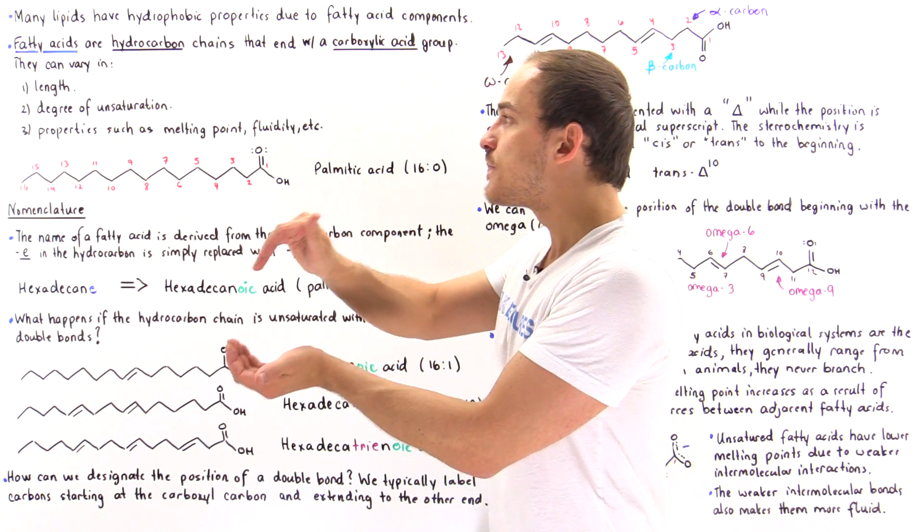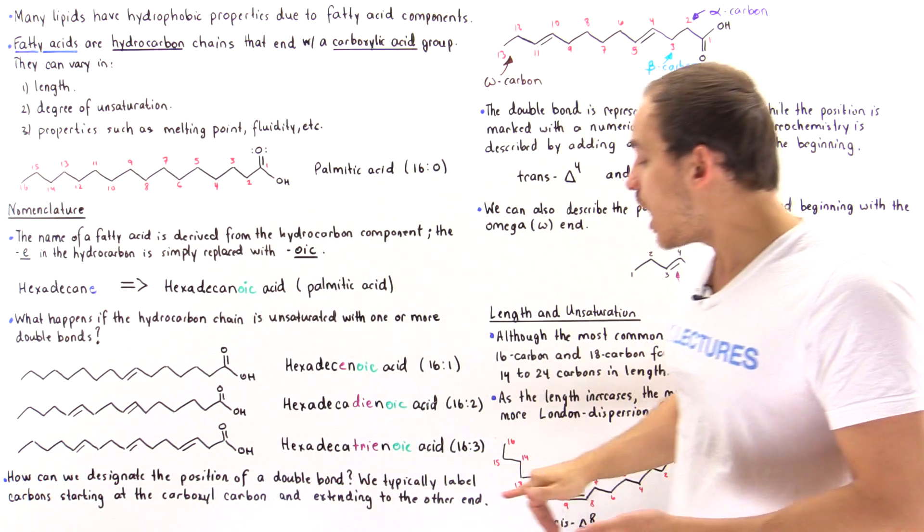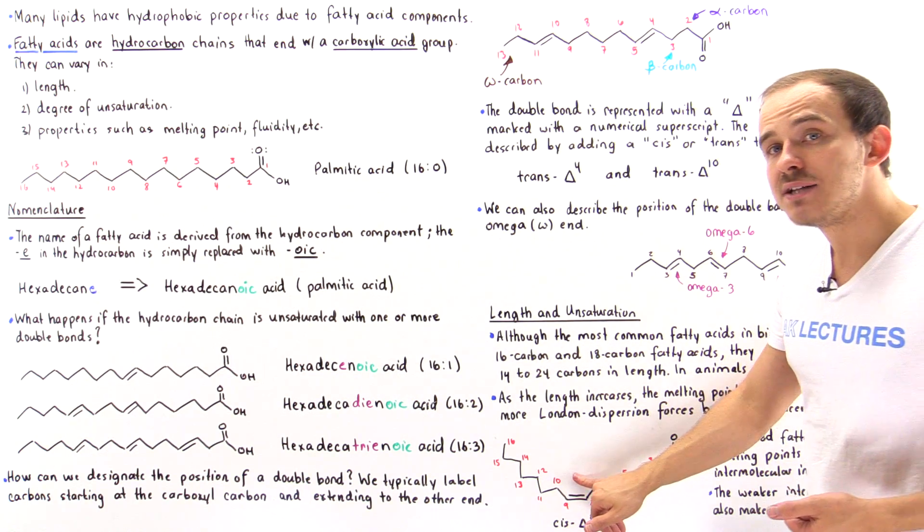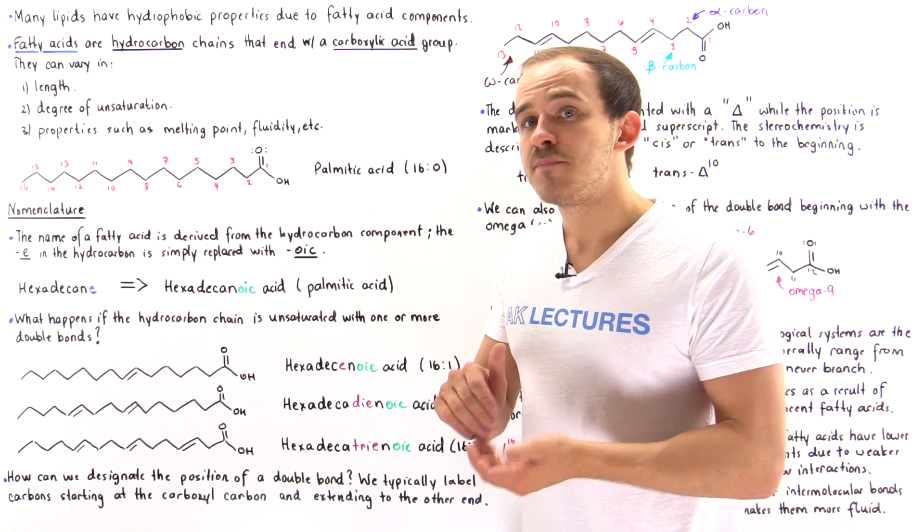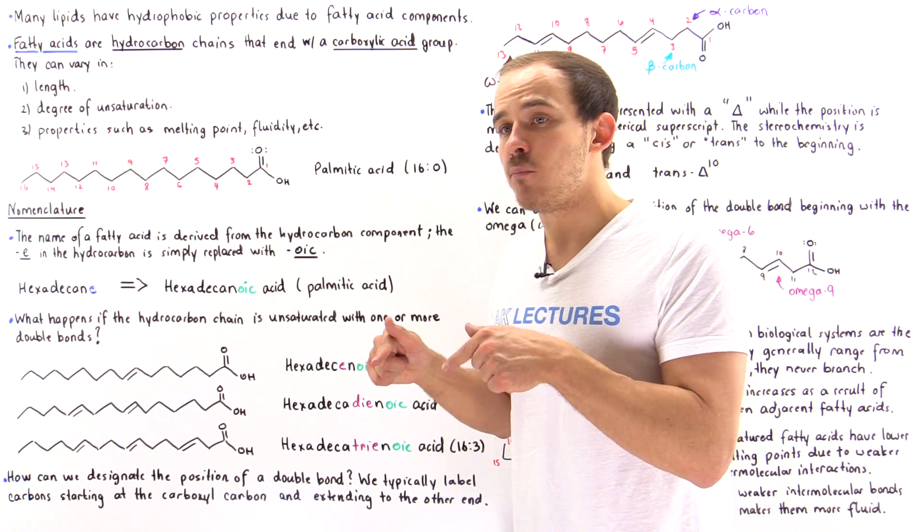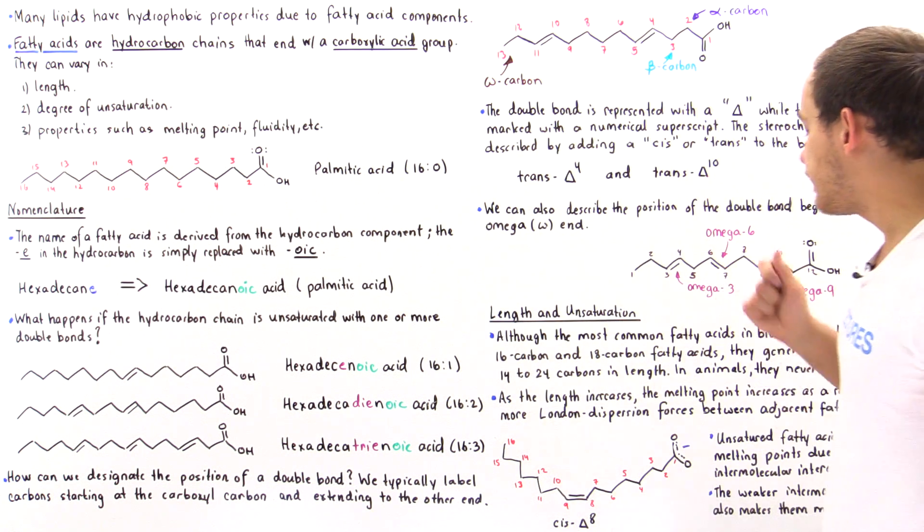And ultimately, because the fatty acids don't attract as well as a result of these double bonds, increasing the number of double bonds in the fatty acid not only lowers the melting point, it also increases the fluidity of that fatty acid.